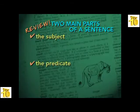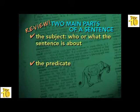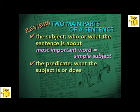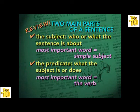Every sentence can be broken down into two main parts: the subject and the predicate. The subject expresses who or what the sentence is about, and the simple subject is the most important word within it. The rest of the sentence is the predicate, which tells what the subject is or does, and the most important word in the predicate is the verb.